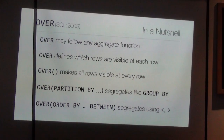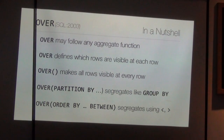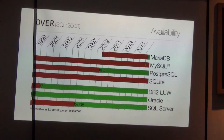In a nutshell: OVER follows aggregate functions — MIN, MAX, COUNT, and so on — when you don't want GROUP BY. It defines which rows are aggregated, and it defines this differently for each row with the framing feature. An empty OVER clause means over everything. PARTITION BY segregates like GROUP BY does — same value, same group. ORDER BY with BETWEEN lets you do segregation using range conditions.